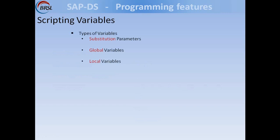Substitution parameters are repository-level variables, so a substitution variable can be used across many jobs and also within other objects like workflows, data flows, and transformations. These are top-level variables. Global variables are created at an individual job level, so they can be used only within that job, but since they are job-level global variables, they can be used inside other objects of the job like workflows, data flows, and transformations.